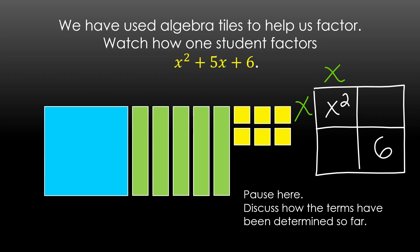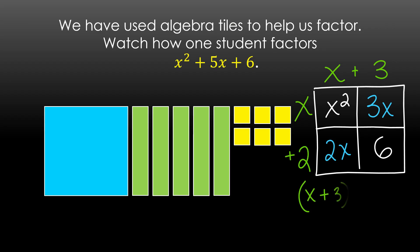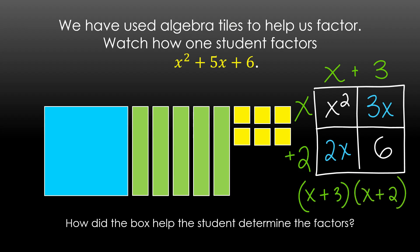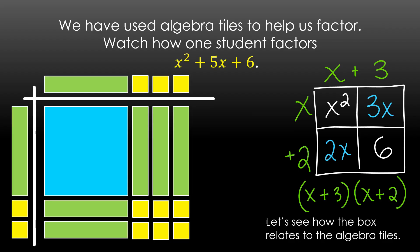Let's watch one method a student might use. We're going to connect this to the area model — the written area model, the box method. This time we're filling in the area. We know we have x squared and 6, but we're not sure how to split up that 5x. We're doing the box method backwards. I know x times x gives me x squared, so I can fill those in for the factors. But now I have to think about what times what gives me 6, and also that 5x needs to be split among the other two boxes. Students will start figuring out that shortcut procedure on their own. We can see our factors relate beautifully to the algebra tiles — all the pieces are set up in the same spot.